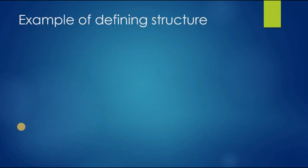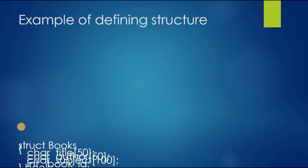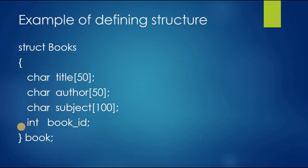Now we will see an example of defining a structure. Let's take an example of a book. Here we have struct, structure name as books. Then inside the curly bracket we define character arrays. Three types of arrays we declared here. Then we declared the integer book_id as a variable. Then we closed the curly bracket. Then we give it a name book and a semicolon. This example can be used when we are keeping a record of a library.